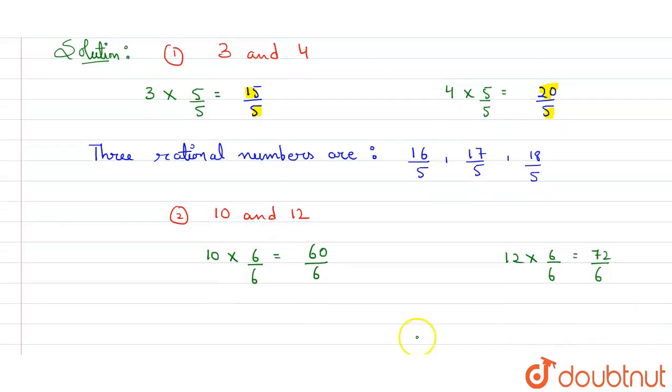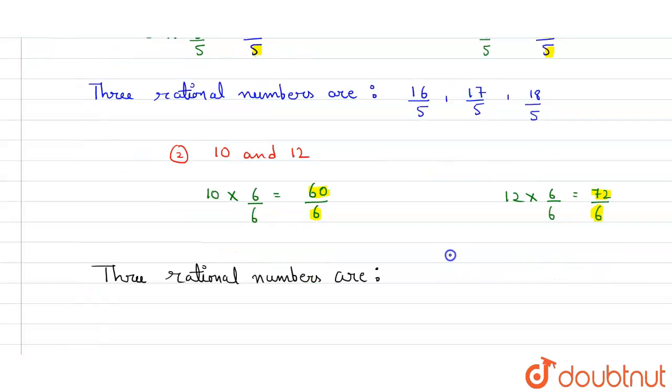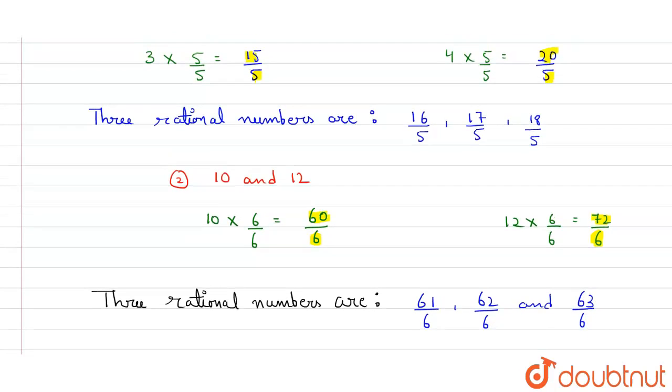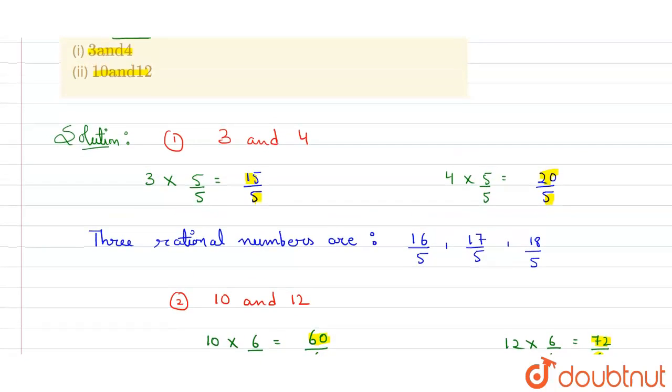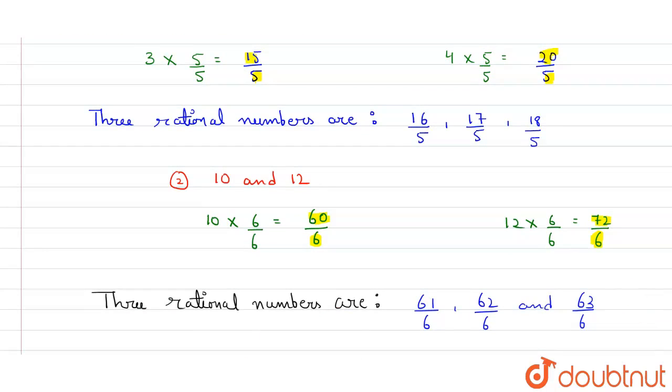So again we can write three rational numbers here from 60 to 72. I will write 61 by 6, 62 by 6, and 63 by 6. We can write many more, but the question says we have to write only three. So three numbers between 3 and 4, and 10 and 12 are here. Thank you.